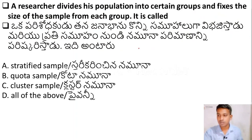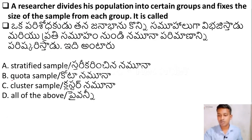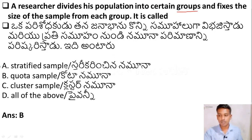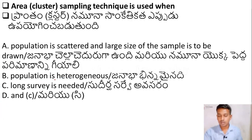The next question: a researcher divides his population into certain groups and fixes the size of the sample from each group. It is called — Option A: Stratified sample, Option B: Quota sample, Option C: Cluster sample, Option D: All of the above. The right answer is Quota sampling. This is slightly different from stratified random sampling — the researcher divides the population into groups and selects some groups randomly. Quota means group.